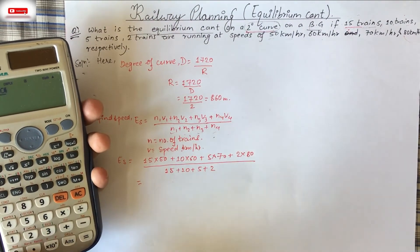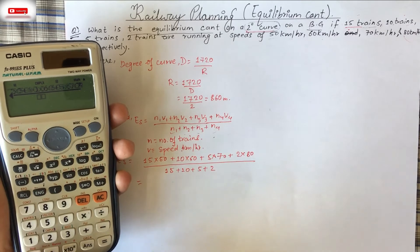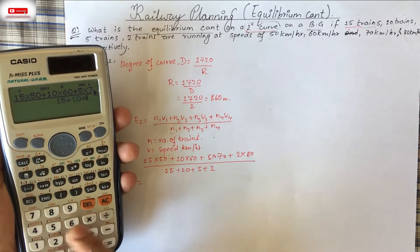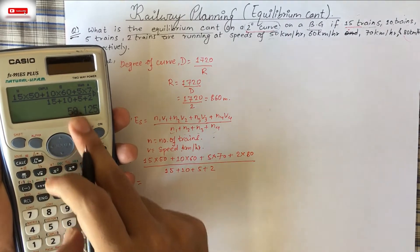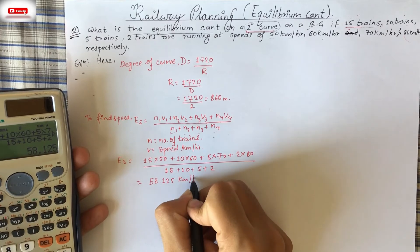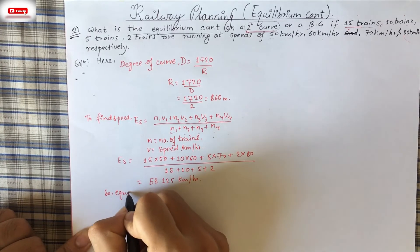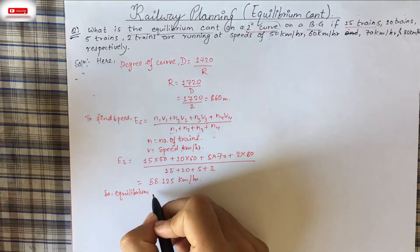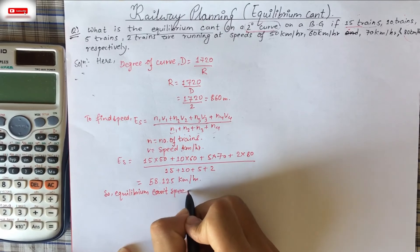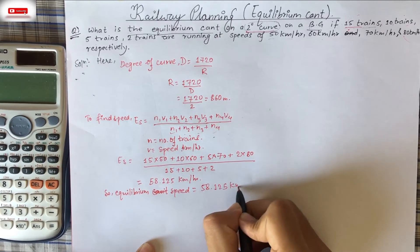Let's see what will be our answer. 15 into 50 plus 10 into 60 plus 5 into 70 plus 2 into 80. 15 plus 10 plus 5 plus 2. 58.125 kilometer per hour. This is our equilibrium speed. So we can write equilibrium speed is equal to 58.125 kilometer per hour.